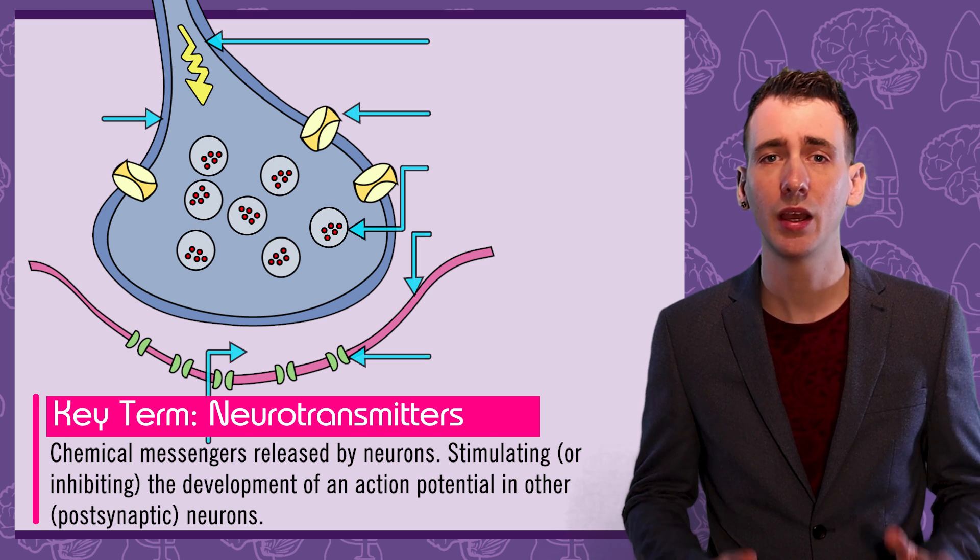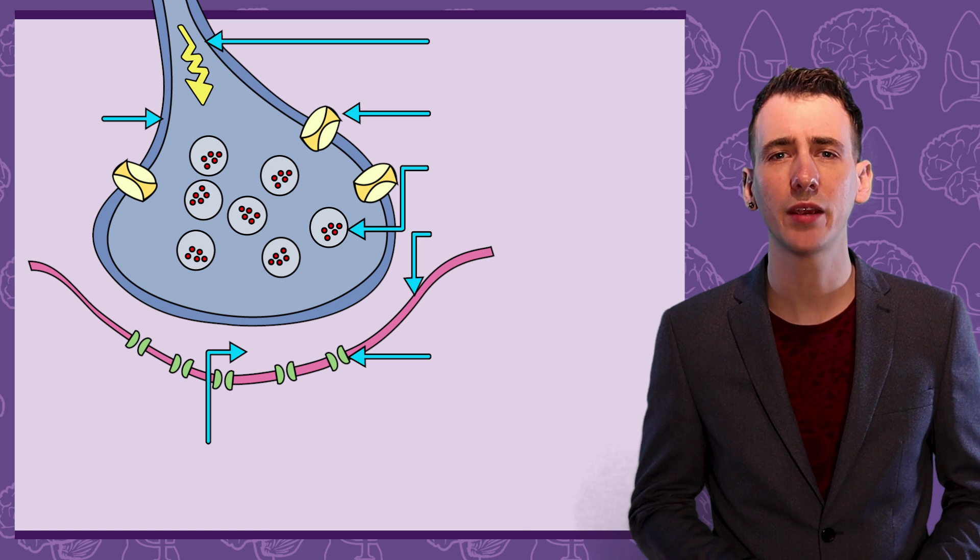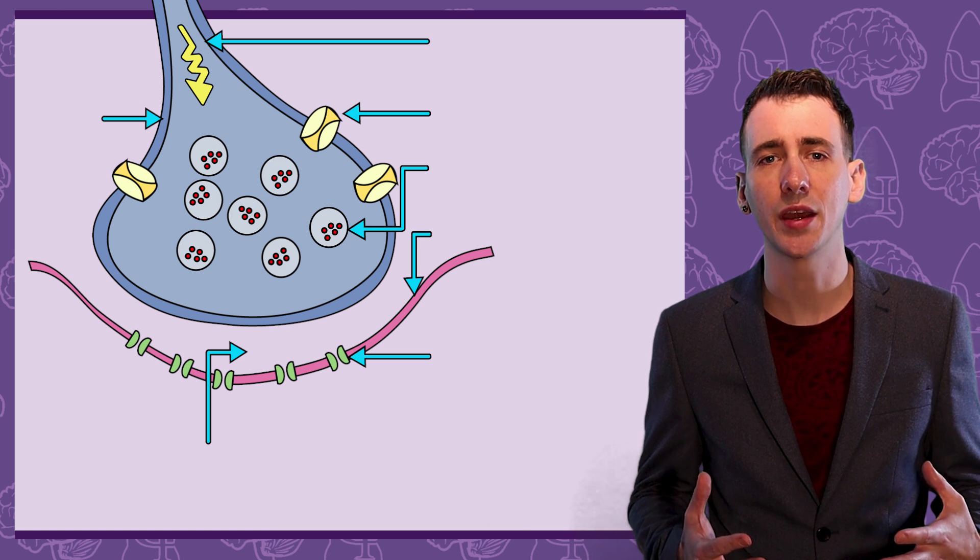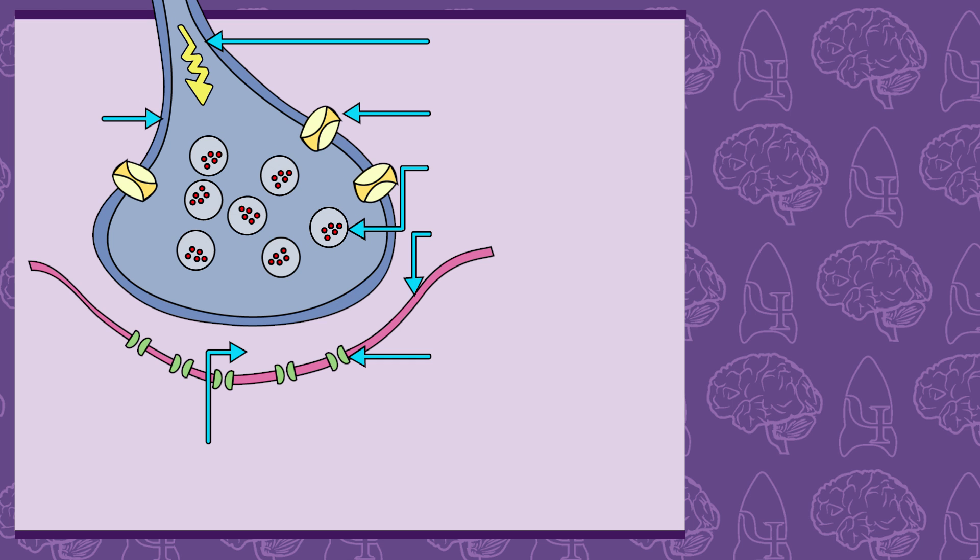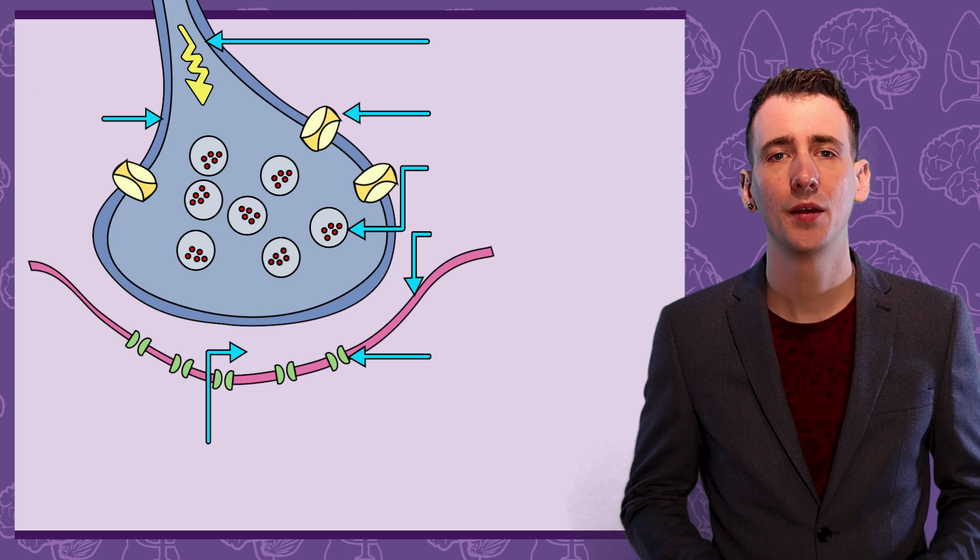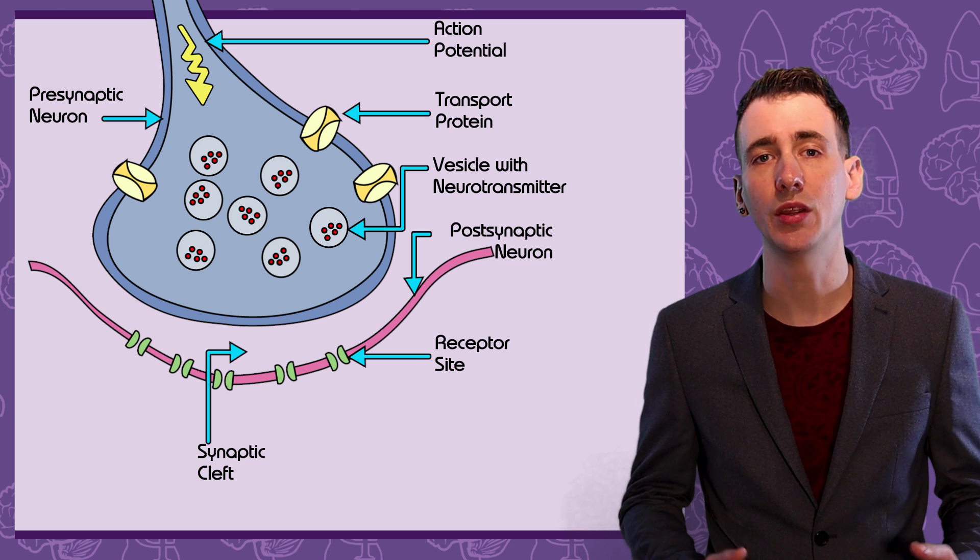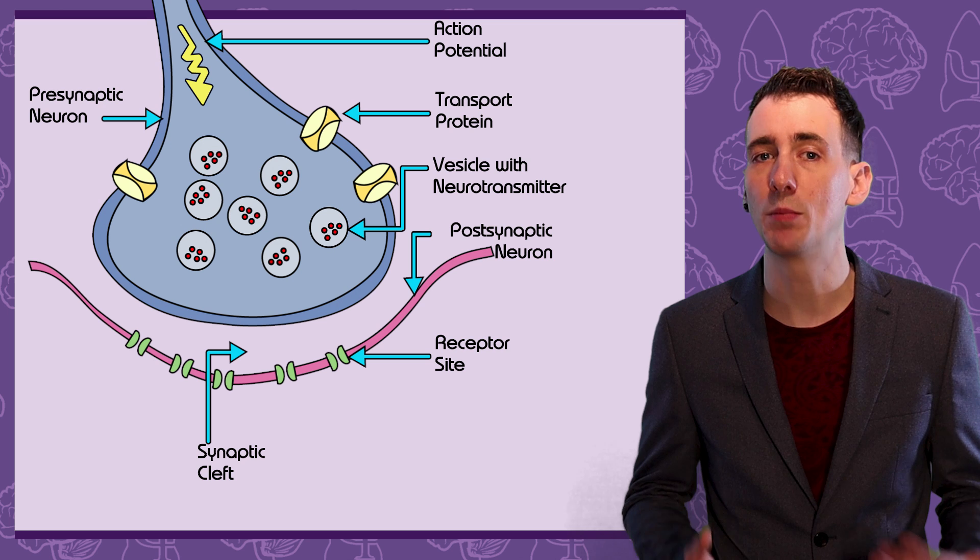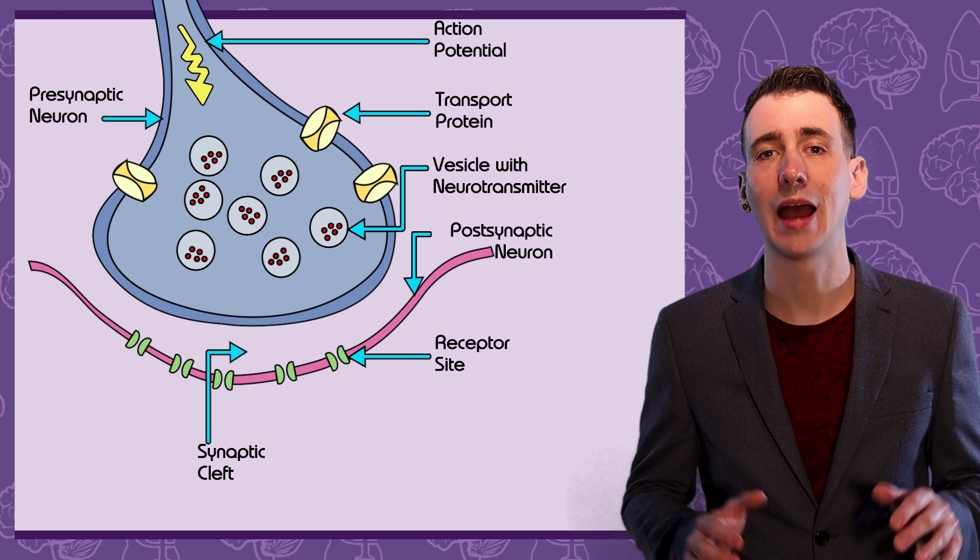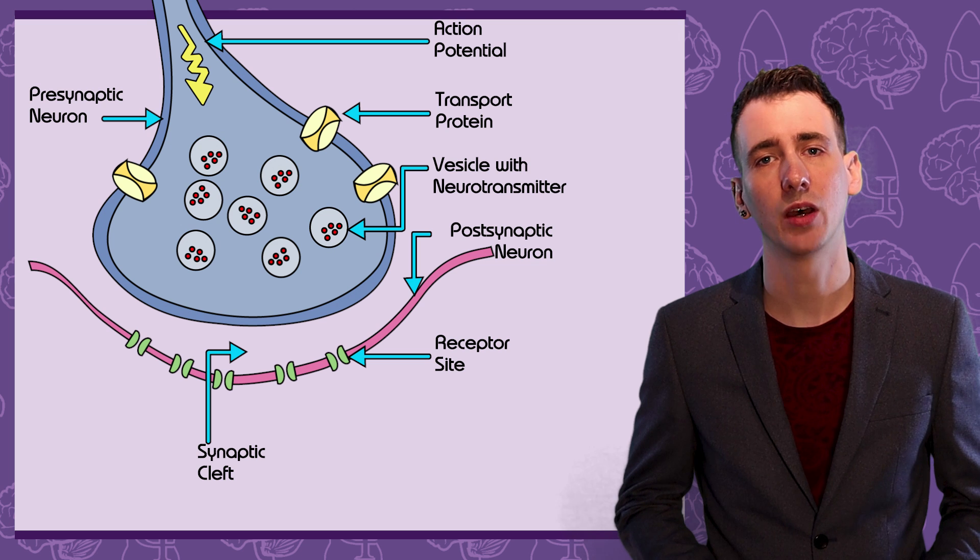Let's label this diagram and then explain each part as we talk about the process. If you've seen this diagram before, you may want to pause the video and say what each arrow is pointing to. At the top, the arrow represents the action potential that has travelled down the axon of the presynaptic neuron. The blue structure is the axon terminal of the presynaptic neuron where the axon finishes. A neuron will have many axon terminals.